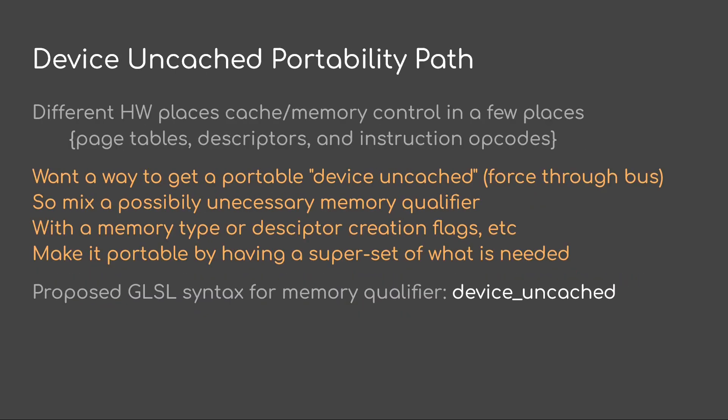Another thing we need is a device-uncached portability path. AMD provides device-uncached as a memory type when you do allocations, but NVIDIA does not. It would be great if we could mitigate all the different kinds of hardware here — page table settings, descriptors, and instruction opcodes. I'm suggesting a portable version where you specify it in all possible locations, and hardware that doesn't need it in that location just ignores it. That means putting device-uncached in as a memory qualifier, so you can force a store to go through the bus without having to flush all your caches just to write something the CPU can read.